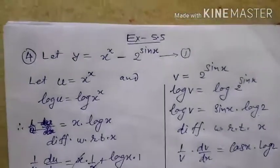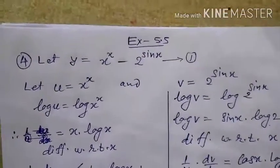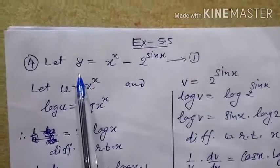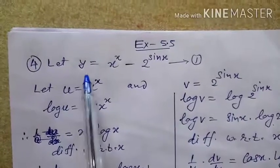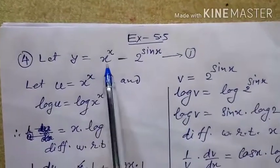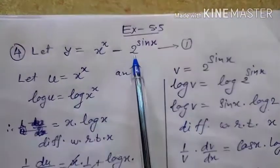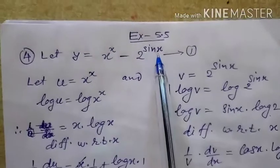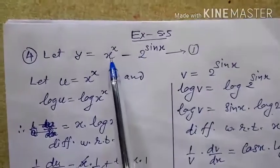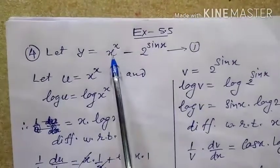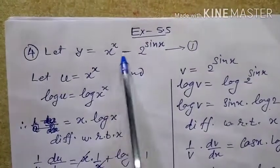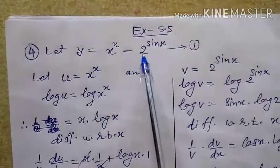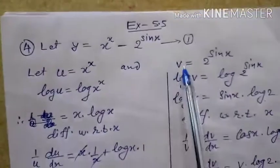Hello everyone, this is question number 4 of exercise 5.5. Let y = x^x - 2^(sin x). In this question, this is the first term and this is the second term. So suppose the first term is u and the second term is v.